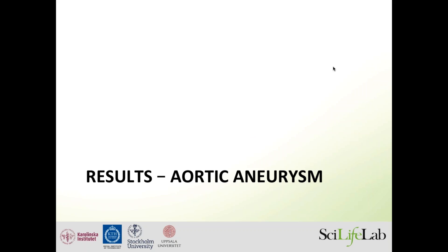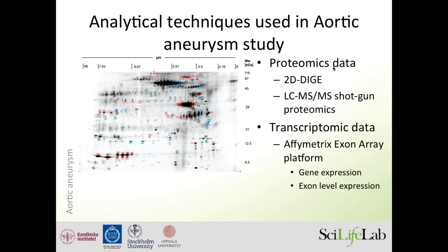Now I will start showing you some results to illustrate how these different methods can be applied. Starting with aortic aneurysm: we began with 2D DIGE data. You can see the gel where proteins are separated according to their isoelectric point using isoelectric focusing, and then by molecular weight. I have color-coded the spots that were statistically significant — they were spread all over the gel, indicating that it was not one single protein but rather a group of different proteins forming a signature. We also used LC-MS/MS shotgun proteomics and for transcriptomics we used the Affymetrix Exon Array platform.